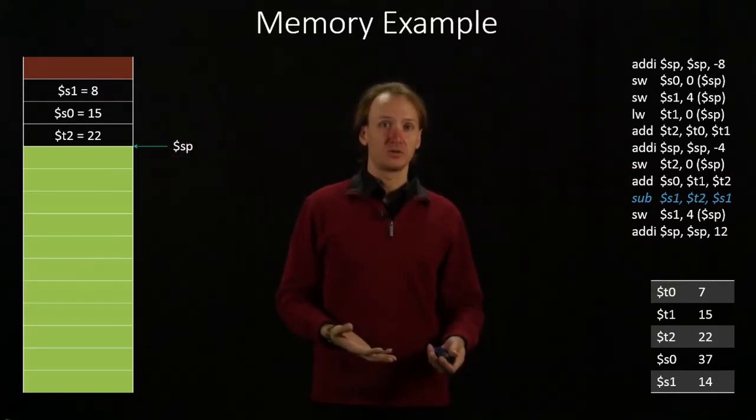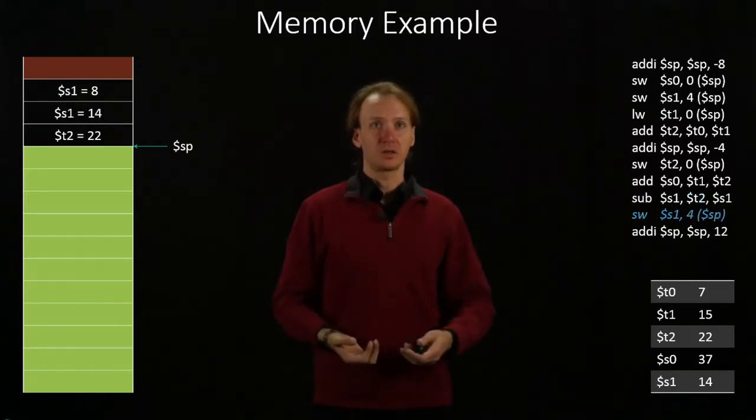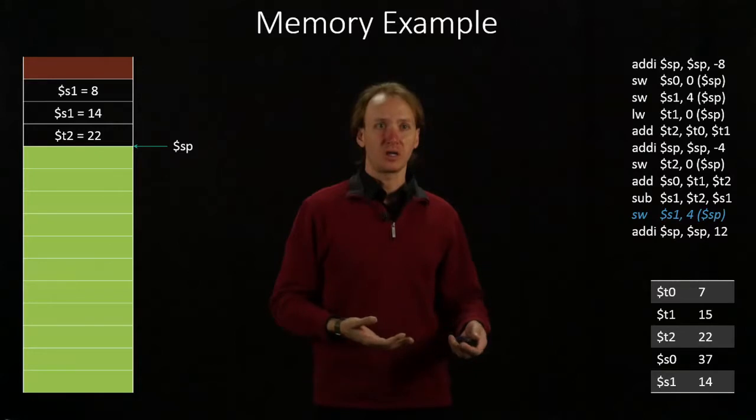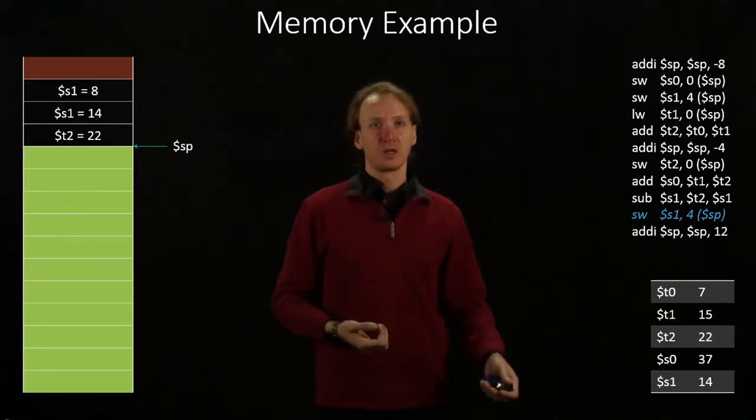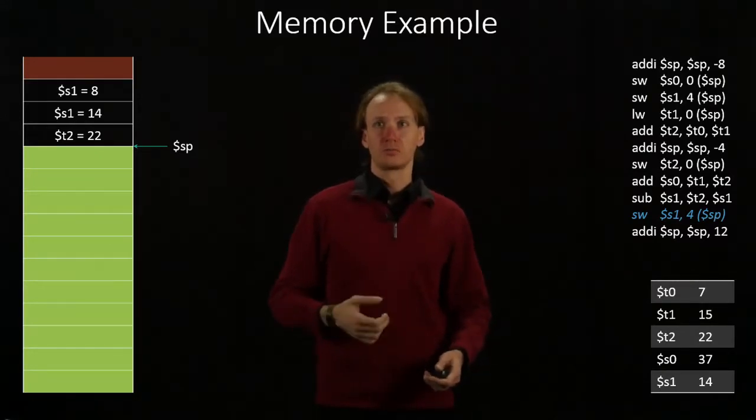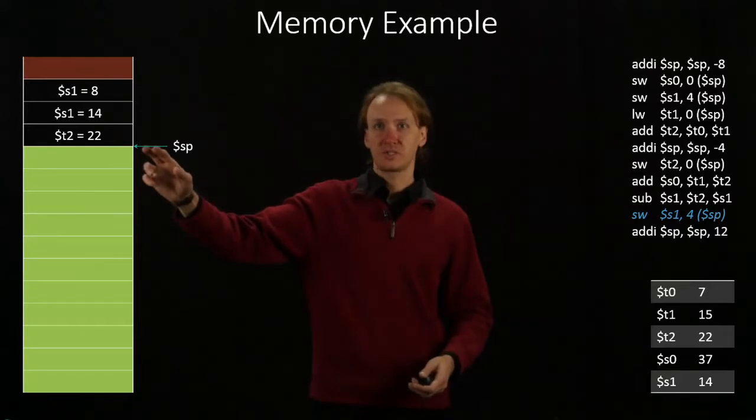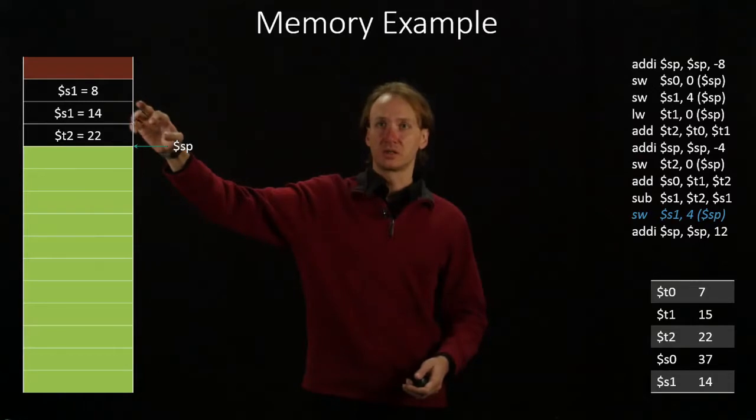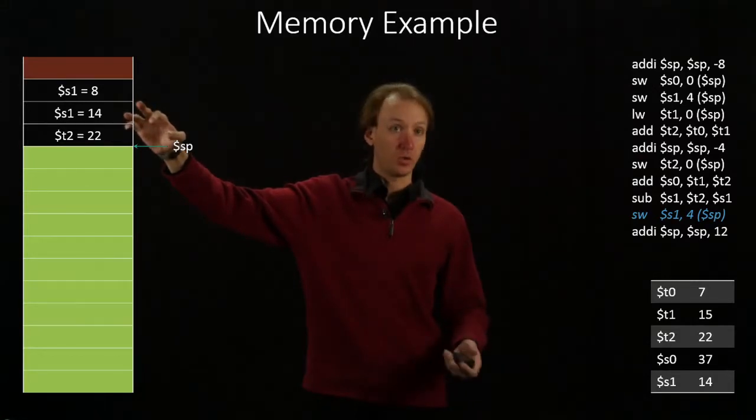But I can change the values that I've got in memory. I can overwrite them by using another store word. So now I'm writing the current value of S1 into stack pointer plus 4. So I go to the current value of stack pointer. I go up 4 bytes, and I use those 4 bytes to store the value of 14.